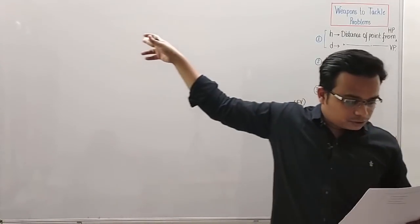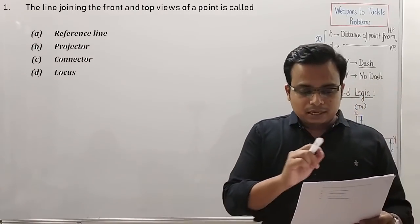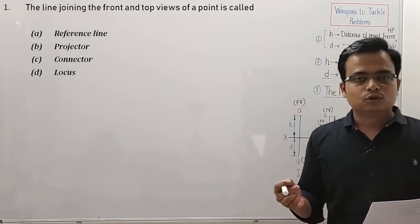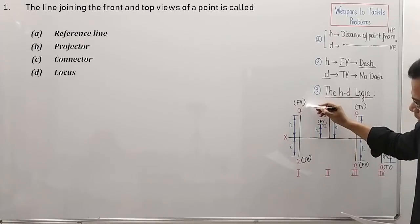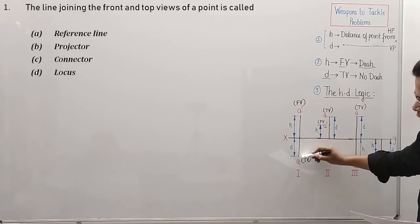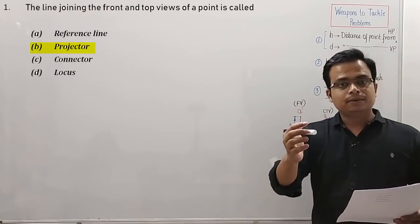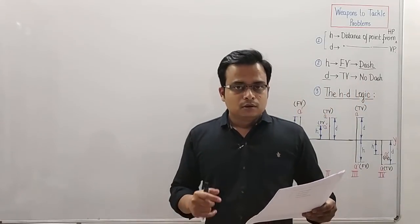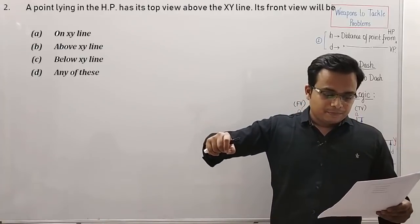Problem number one: 'The line joining the front view and top view of a point is called?' This line joining A-dash (front view) and A (top view) is referred to as the projector. So the correct option is option B.